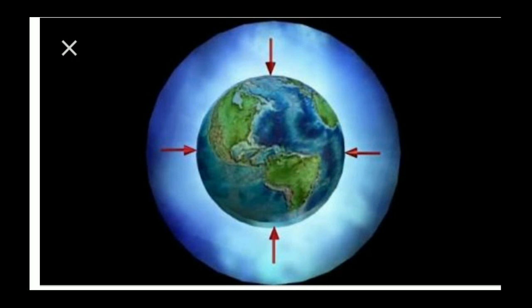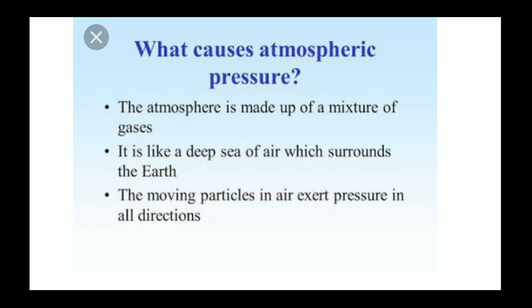What causes atmospheric pressure? The atmosphere is made up of a mixture of gases, and these gases create pressure on the earth. It is like a deep sea of air surrounding the earth. The moving particles in the air exert pressure in all directions — not only on top of the earth but also at the bottom and on the equatorial part. Air pressure is exerted in all directions.